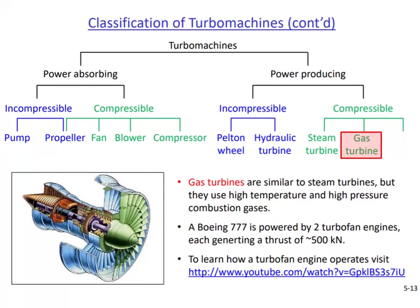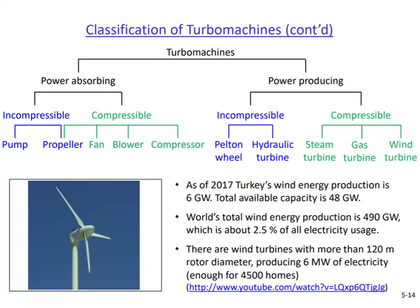As seen in the video, gas turbines also have compressors and can be combined with steam turbines to generate more power. The final item in our list is the wind turbine. These slides note that Turkey's installed wind energy capacity was about 6 gigawatts as of 2017, and that number raised to about 9 gigawatts by 2020.